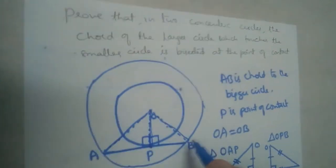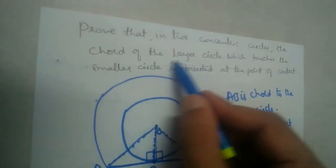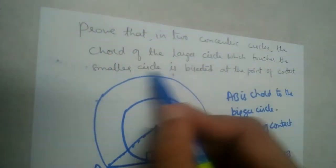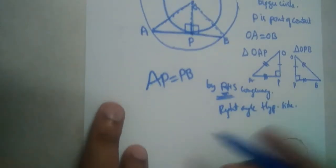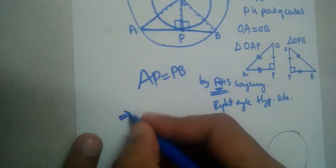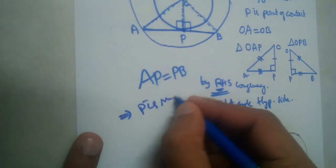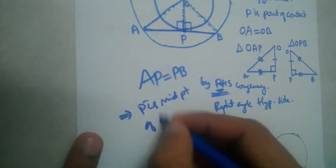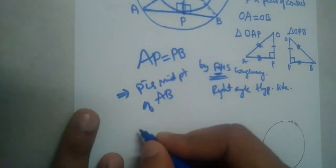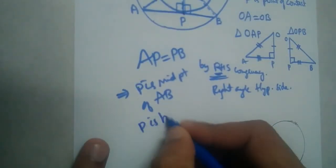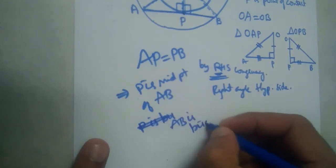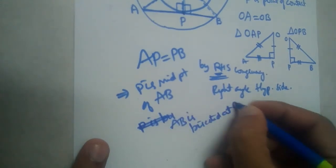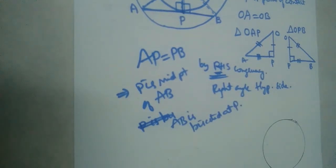AP equals PB — that means point P is the midpoint, so P is bisecting the chord. The chord of the larger circle which touches the smaller circle is bisected at the point of contact. Therefore, P is the midpoint of AB, which means AB is bisected at P, the point of contact.